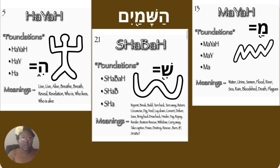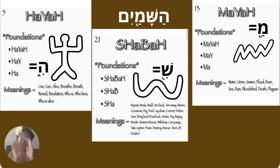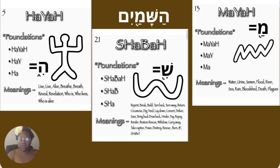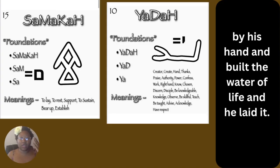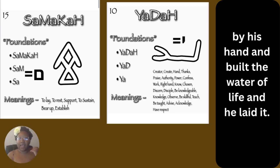Now what did he mark off? It said 'Yada' — we already read that. Take a screenshot. The word that we did not read is 'Maya.' It says water, urine, semen, flood, river, sea, rain, flesh, death, and plague. So I picked water, the first one. And then 'Samaka' and 'Yada' right there. I said: the most high marked off by his hand and built the waters of life and he laid it.